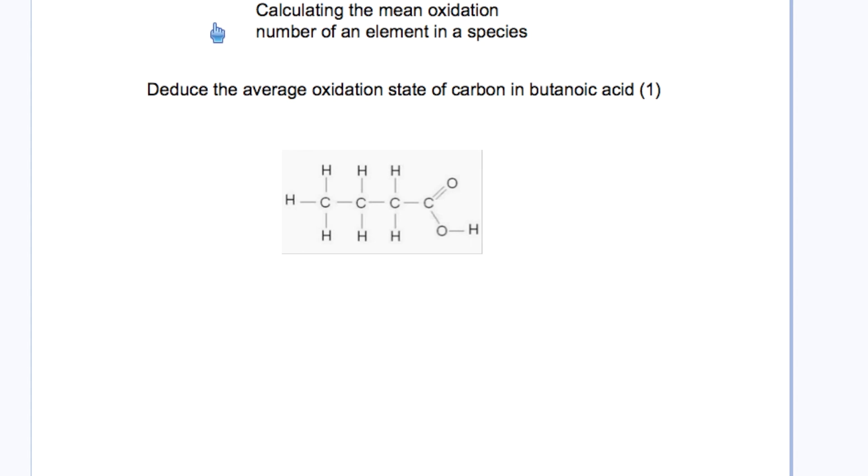Now moving to HL questions. First, calculating the mean oxidation number of an element in a species. This is simple but unfamiliar to students because they've never seen oxidation number assessed this way. Expect questions slightly different from the past. One way to do this is to remember that this neutral molecule has a net oxidation number of zero. Oxygen has -2 in almost all cases unless bonded to fluorine. So two oxygens give -4.